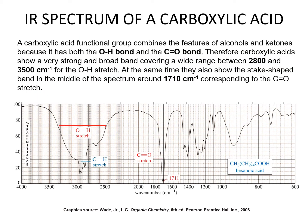A carboxylic acid functional group combines the features of alcohols and ketones because it has both the O-H bond and the C=O bond. Therefore, carboxylic acids show a very strong and broad band covering a wide range between 2800 and 3500 centimeters to the minus one for the O-H stretch, as well as a stake-shape band around 1710 centimeters to the minus one for the C=O stretch. The broad O-H signal is also interrupted by the C-H stretch right in the middle. This spectrum corresponds to hexenoic acid.